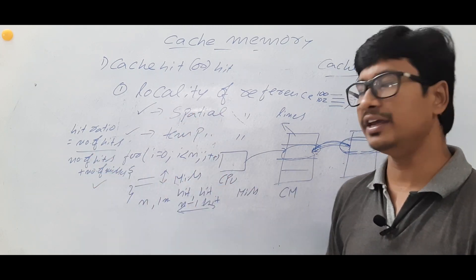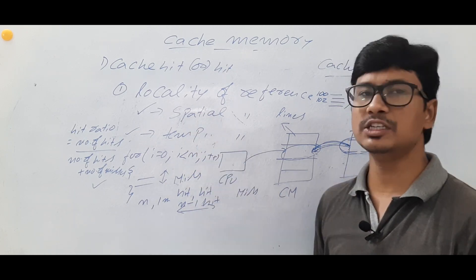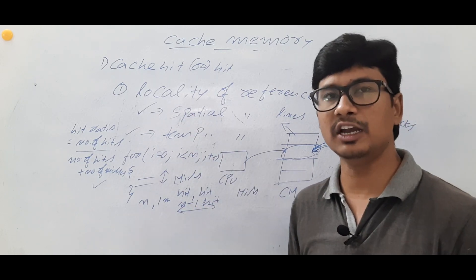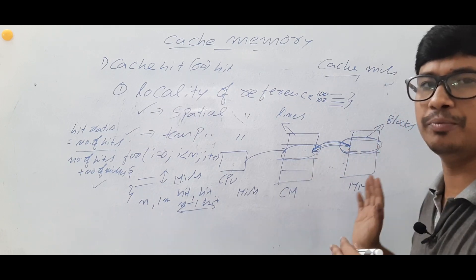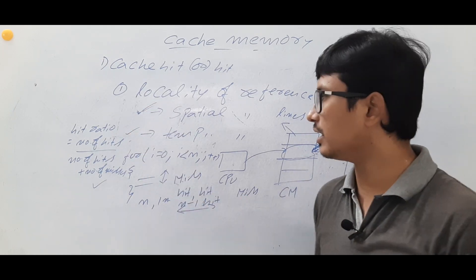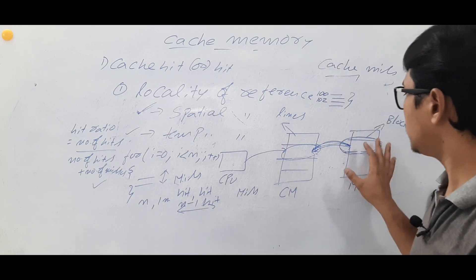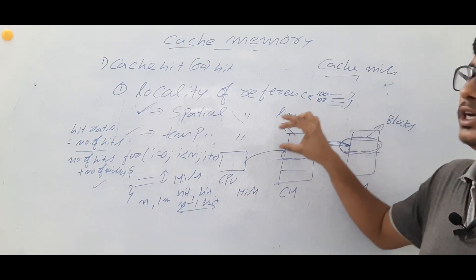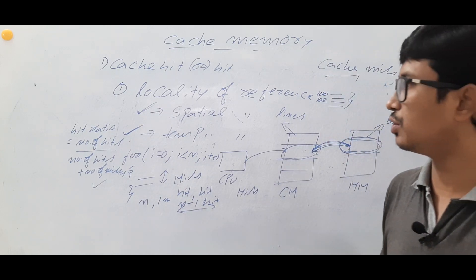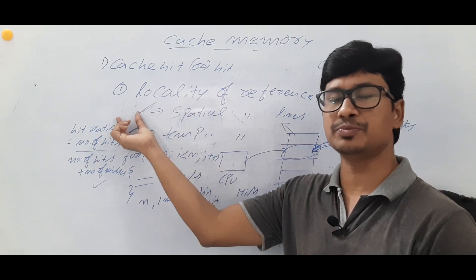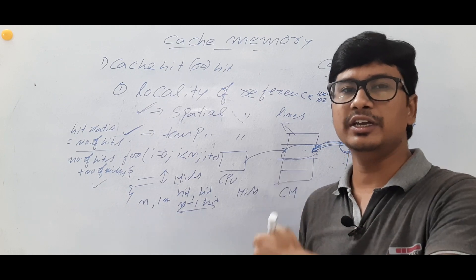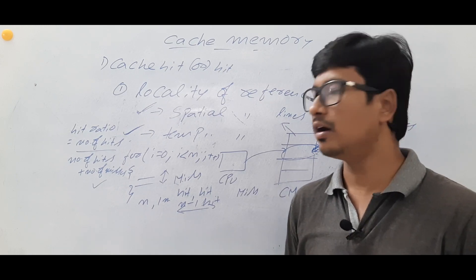To summarize locality of reference: spatial locality means instead of bringing a single word, you bring the entire block into cache. Temporal locality means recently executed instructions are likely to be required again, so keeping them in cache saves repeated main memory accesses. Spatial locality talks in terms of space; temporal locality talks in terms of time.